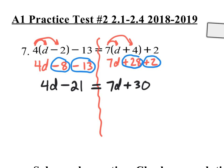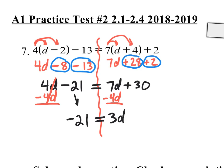Think about it for a couple of seconds. If I subtract 7d from both sides, I'd end up with a negative d on the left side, which is fine. But if I subtract 4d from both sides, I end up with a positive 3d. I prefer dealing with positives, so I'm going to get rid of the 4d by subtracting 4d from both sides. What I do to one side, I must do to the other. All I have left on the left side is negative 21. On the right side, 7 take away 4 is 3d, and I bring down plus 30.